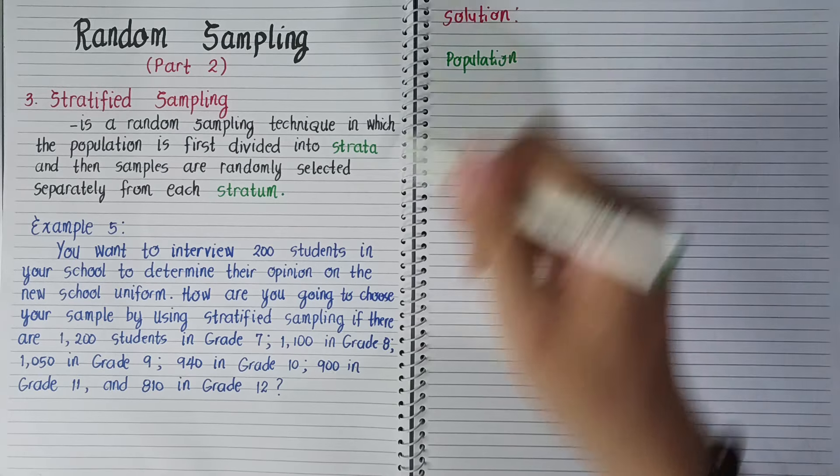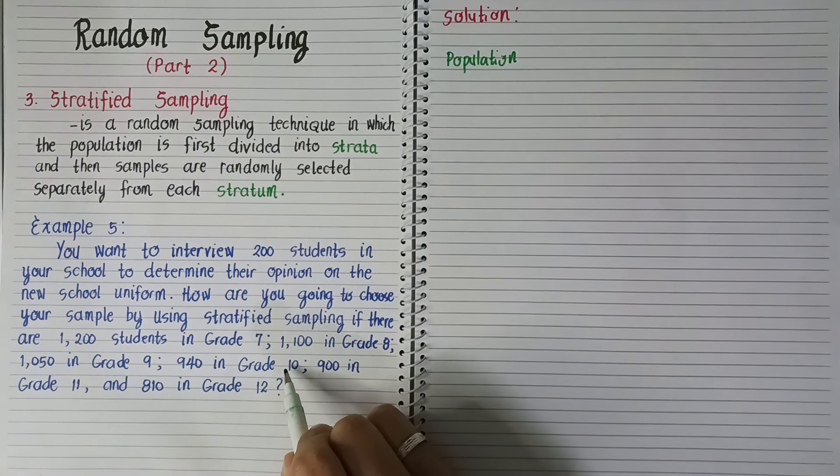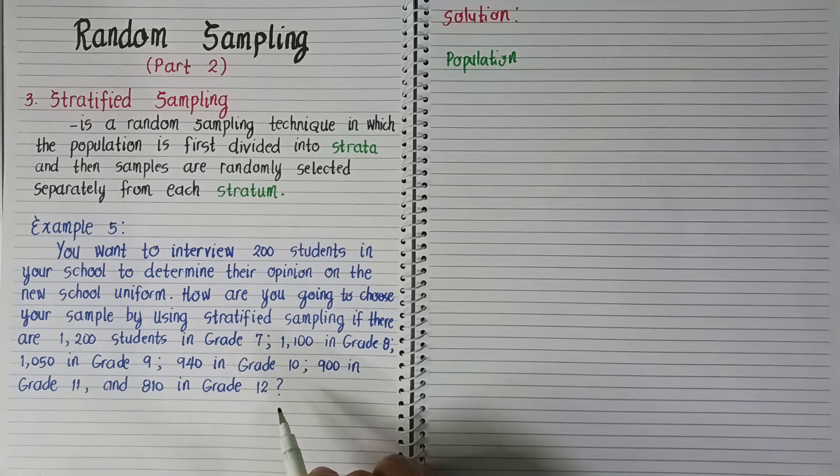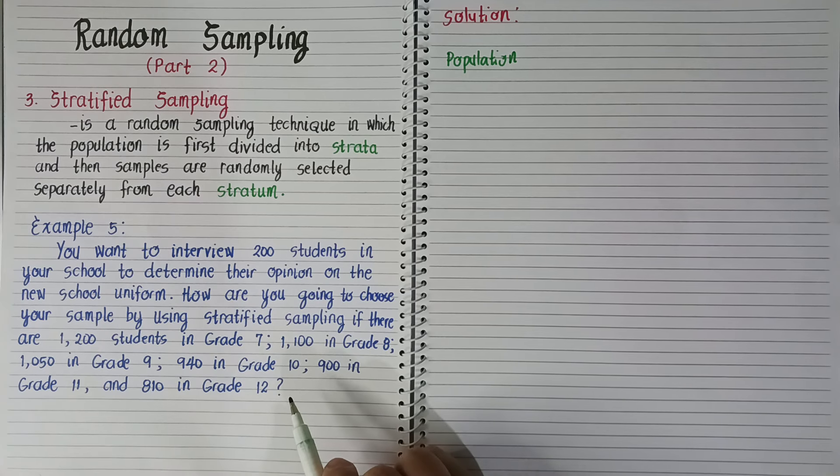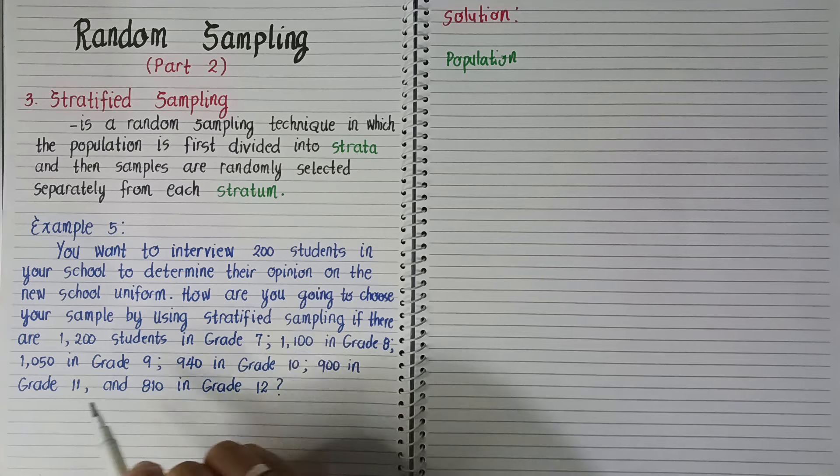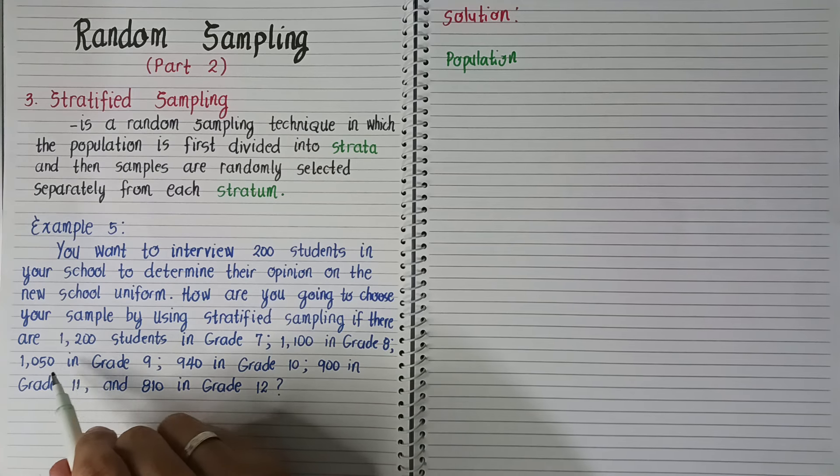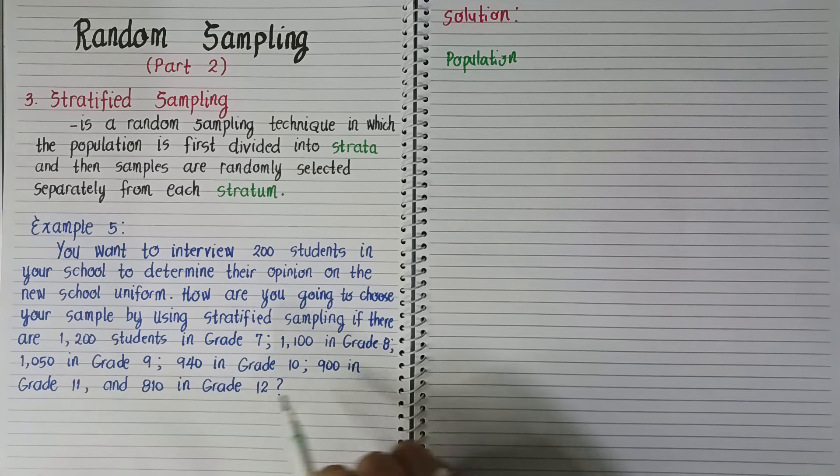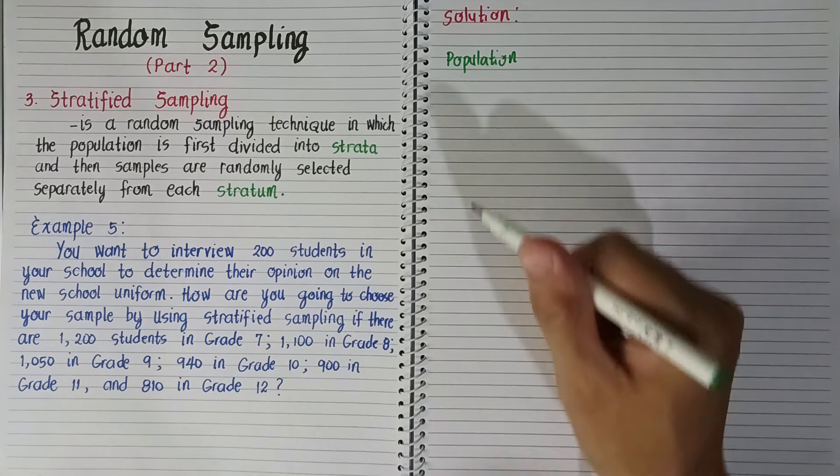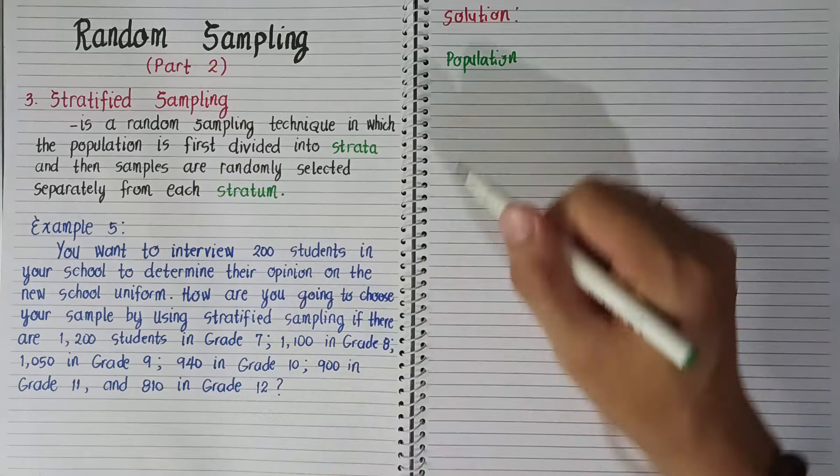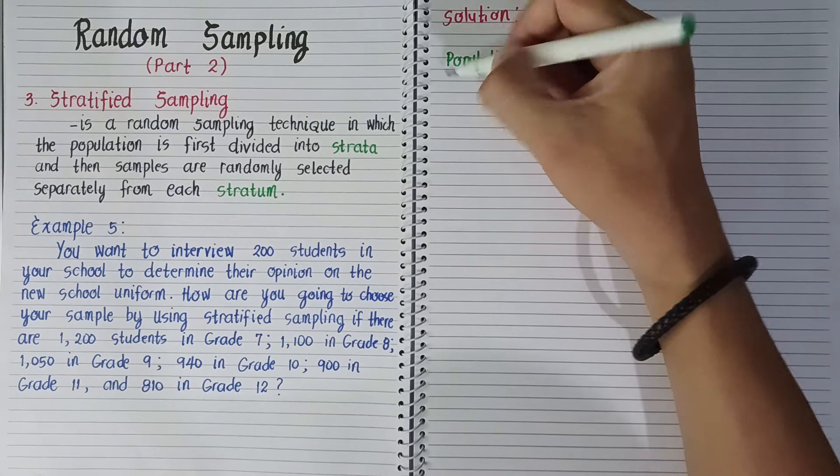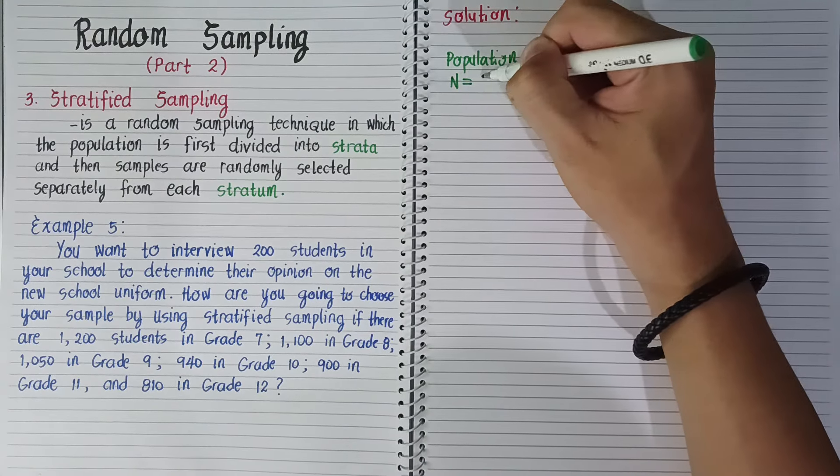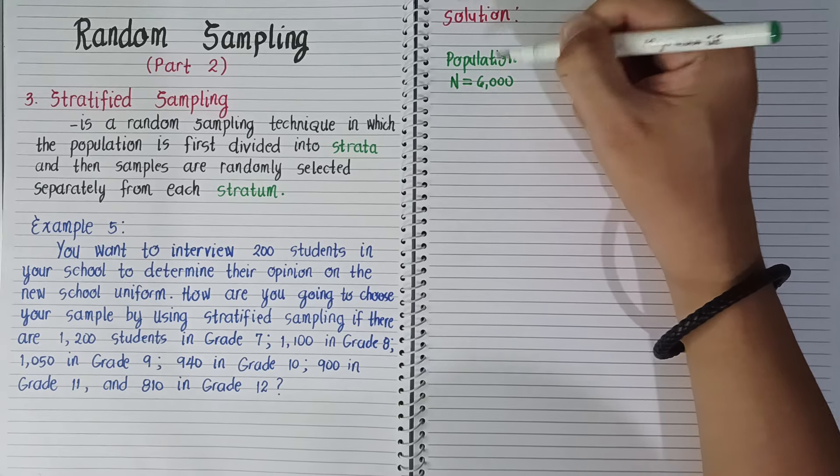Let's add them all together. This equals 1,100 plus 1,200, 1,050, 940, 900, 810. With a total of 6,000 when we add all the given values. So n equals 6,000.